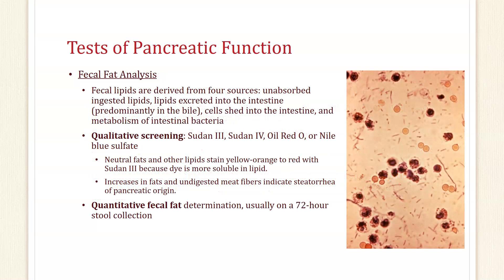Fecal lipids are derived from four sources: unabsorbed ingested lipids, lipids excreted into the intestines by the bowel, cells shed into the intestine, and metabolism of intestinal bacteria. For qualitative testing you can use Sudan-3, Sudan-4, oil red O, or Nile blue sulfate. Neutral fats and other lipids will stain yellow-orange to red with Sudan-3 since the dye is more soluble in lipids. Increases in fat and undigested meat fibers indicate steatorrhea of pancreatic origin. The fat globules shown in the picture, when stained, represent a positive qualitative test with Sudan-3 dye.